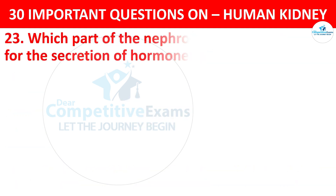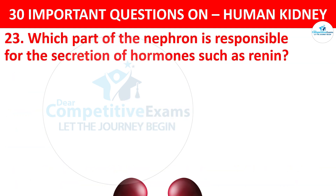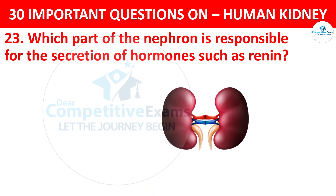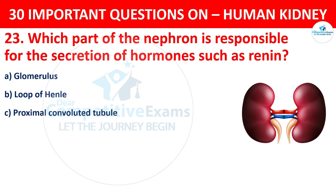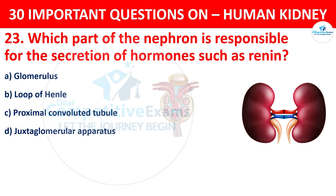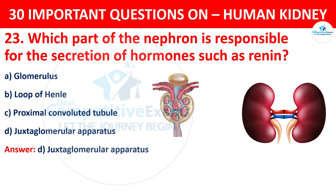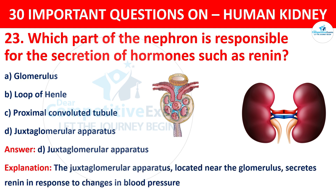Question number 23. Which part of the nephron is responsible for the secretion of hormones such as renin? Your options are glomerulus, loop of Henle, proximal convoluted tubule, or juxtaglomerular apparatus. The correct answer is D, that is the juxtaglomerular apparatus. The juxtaglomerular apparatus, located near the glomerulus, secretes renin in response to changes in blood pressure.